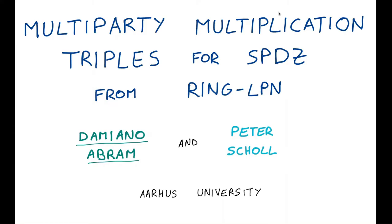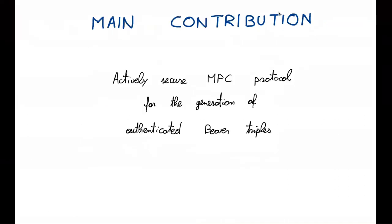Hi, my name is Damiano, and I'm going to present a joint project with Peter Scholl titled Multiparty Multiplication Triples for SPEEDS from Ring LPN. The main contribution of our work is the design of an actively secure MPC protocol for the generation of authenticated beaver triples, and the novelty is that this construction achieves sublinear communication in the amount of generated material.